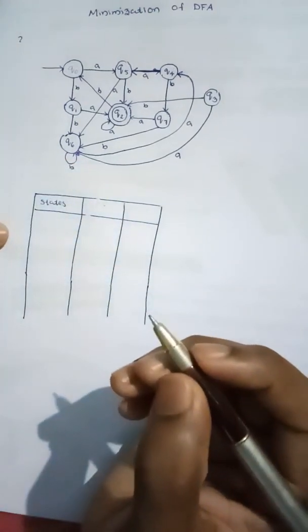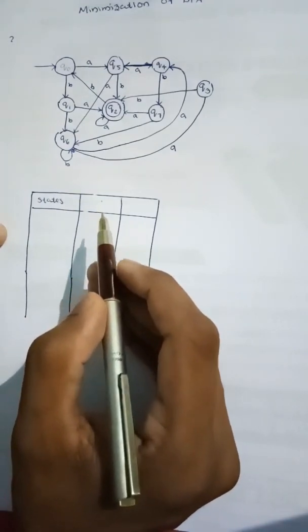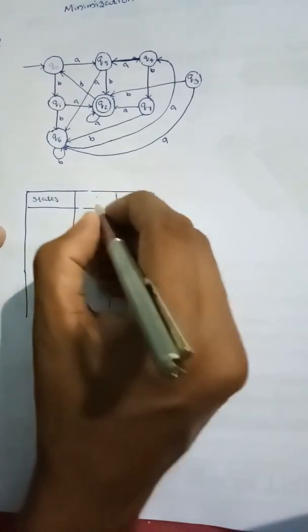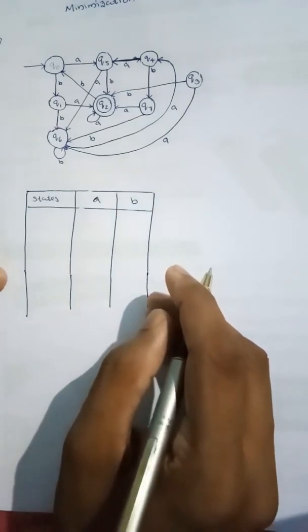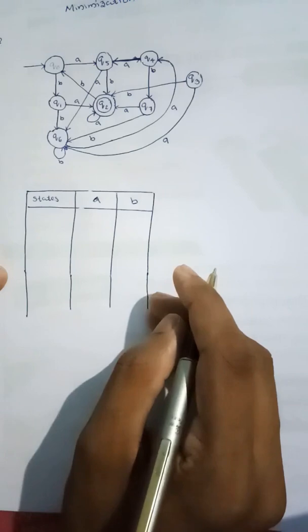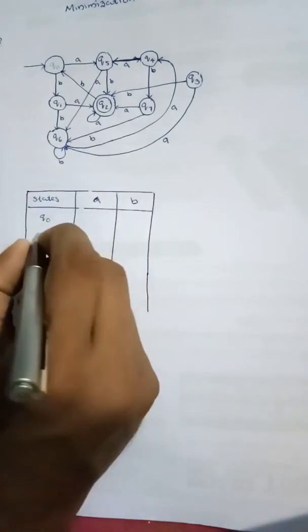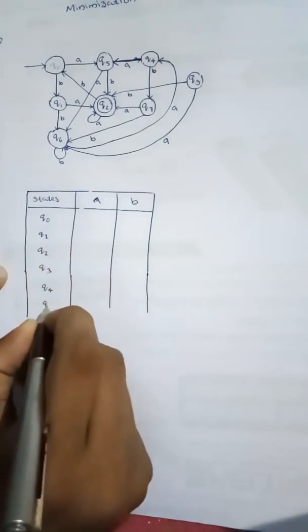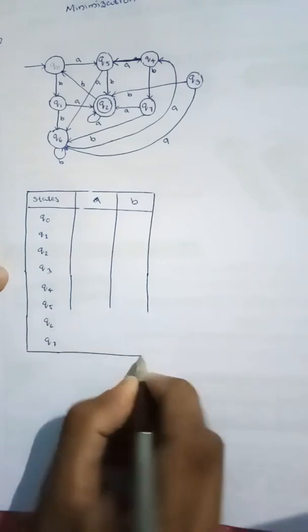Now we have a transition table. We have input alphabets and a diagram of the DFA. We have states: Q0, Q1, Q2, Q3, Q4, Q5, Q6, and Q7. These states are already listed in the series Q0, Q1, Q2, Q3, Q4, Q5, Q6, and Q7.